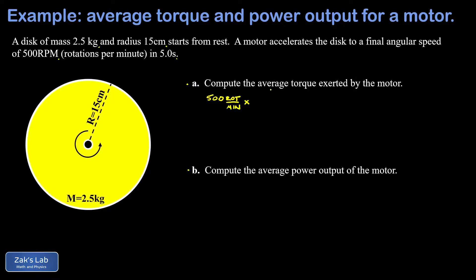RPMs means rotations per minute. We need to convert the rotations to radians—there are 2π radians in a rotation, so the units of rotations cancel. Then we need to convert the minutes into seconds, and of course there are 60 seconds in a minute. This gives us 52.4 radians per second.